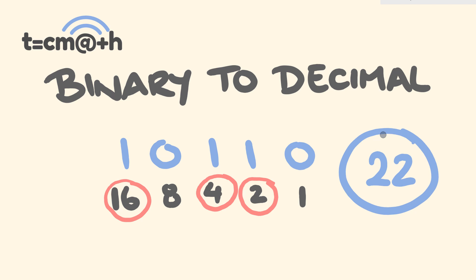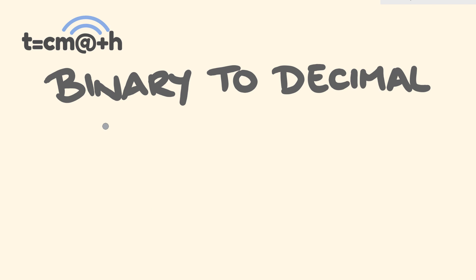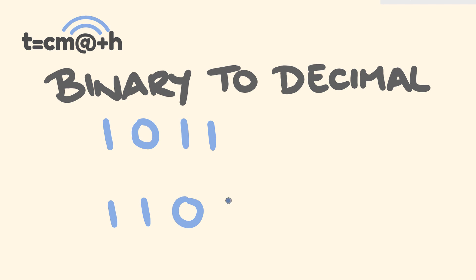Pretty easy, right? Let me give you a couple of examples. What about 1, 0, 1, 1? We'll convert that across. And what about 1, 1, 0, 1, 1? We'll see what the decimal of that is.